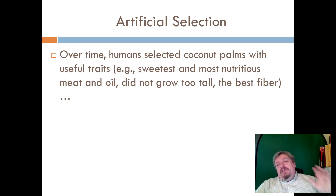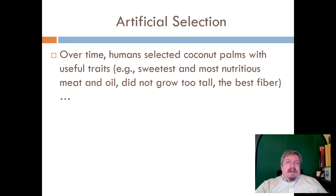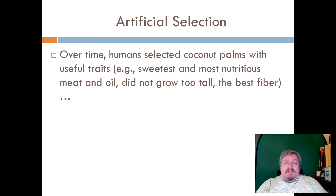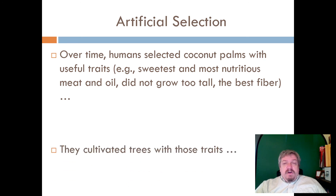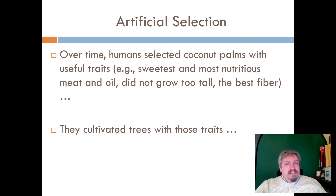There are actually more than two types of coconut trees — around 80 different varieties — because humans bred specific trees for specific traits. Sometimes they wanted trees with the biggest fruit to get more of that white coconut meat, so only trees with really big coconuts were allowed to grow. Others were bred to produce the most coconut oil, which is used for industrial purposes.